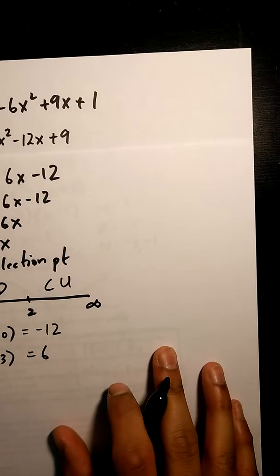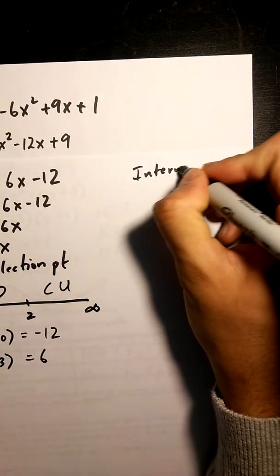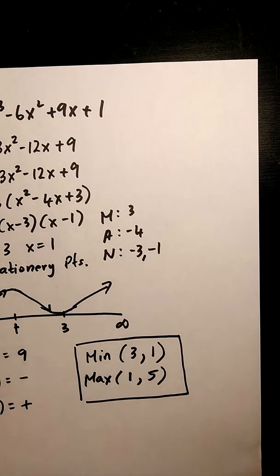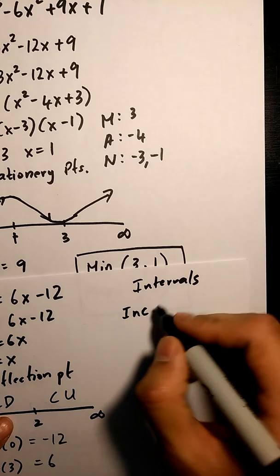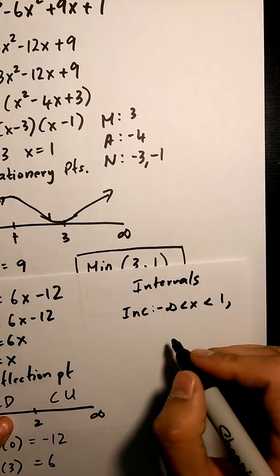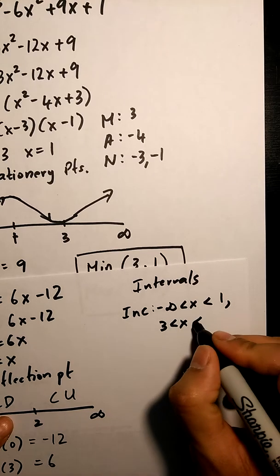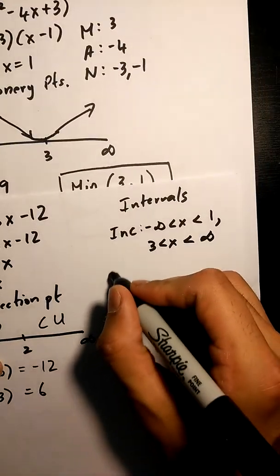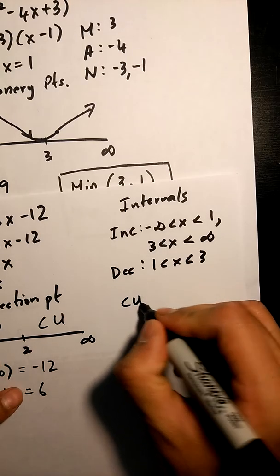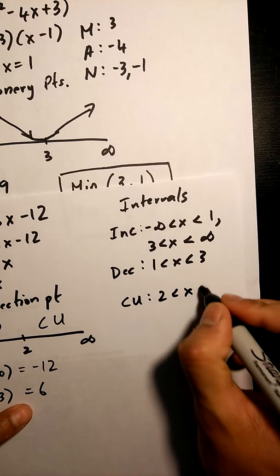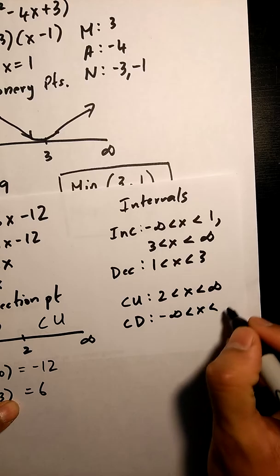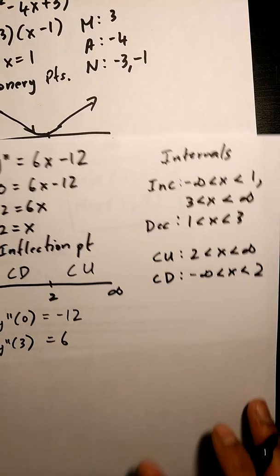We can write our intervals as well now. So, intervals of increase are negative infinity, intervals of decrease, intervals of concave up, and then concave down, so those are intervals there.